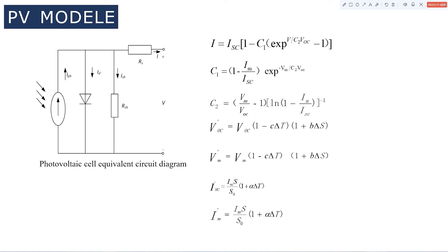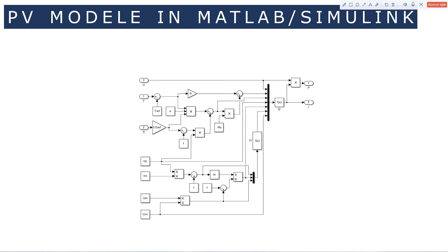Photovoltaic power generation uses the photoelectric effect to convert solar energy into electrical energy. The structure of the photovoltaic cell is similar to a p-n junction. When there is light, it generates voltage and current. According to its governing formula, we can build a model in MATLAB and Simulink.